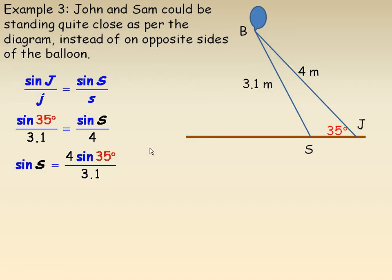We cross-multiply — this is exactly the same as what's on the previous page. And so, we get S to be 48 degrees. So that is all the same; nothing's changed there.